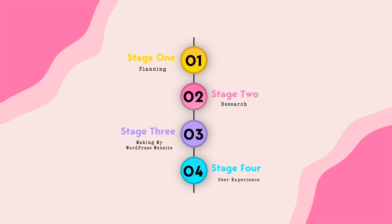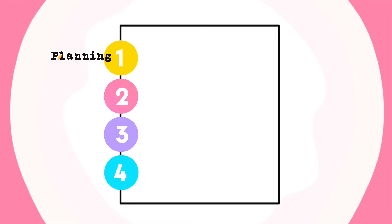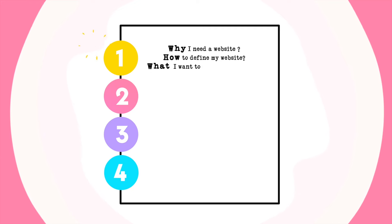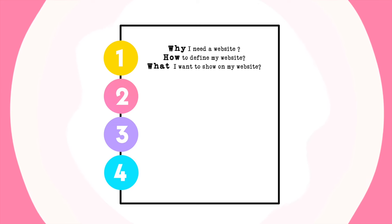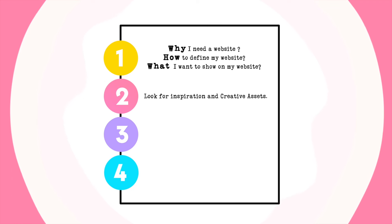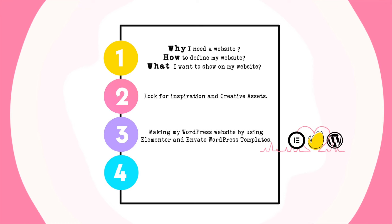In general, there are four stages in my web building process, similar to my logo-making workflow. Stage one is planning: understand why I need a website, clarify how to define my website, then determine what I want to show on my website. Once I've cleared up those questions, I move to stage two, research: look for inspiration and creative assets. Stage three is making my WordPress website using a drag-and-drop web builder tool and Envato's WordPress templates.